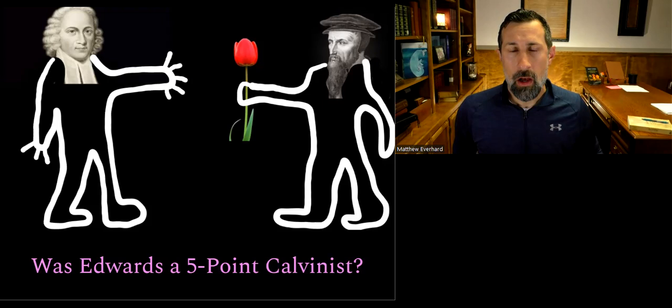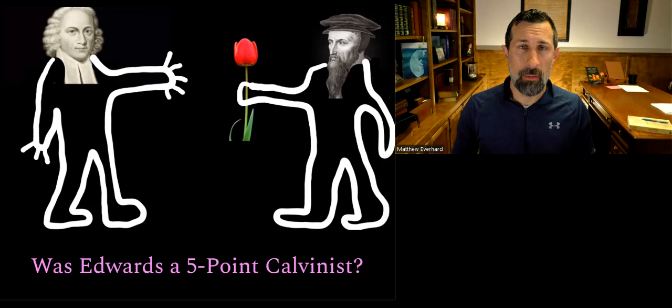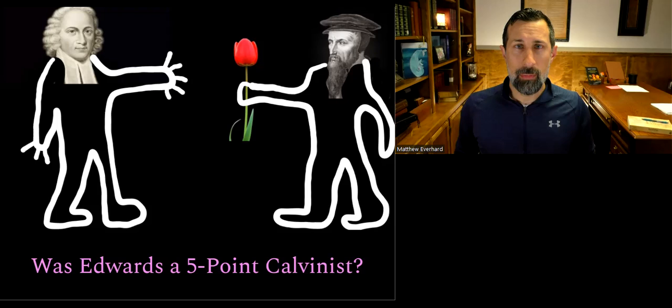The five points of Calvinism are as follows: T stands for total depravity — we're sinful through and through. U stands for unconditional election — we are chosen by God before the foundations of the world. L stands for limited atonement, sometimes called particular atonement. I stands for irresistible grace, and P stands for the perseverance of the saints.